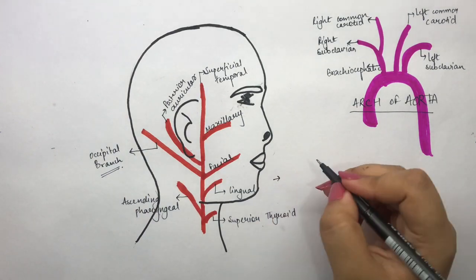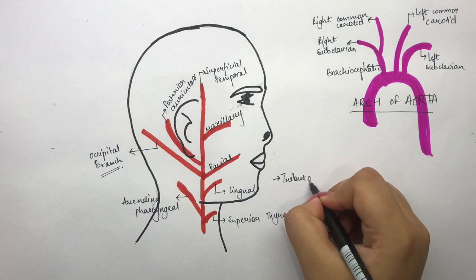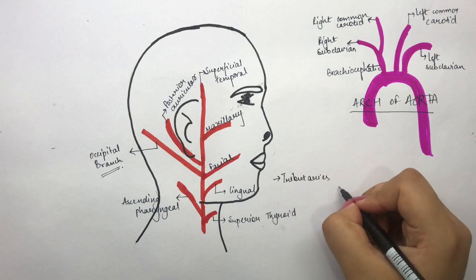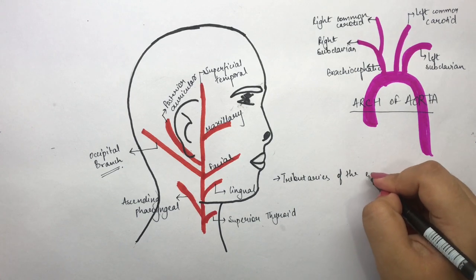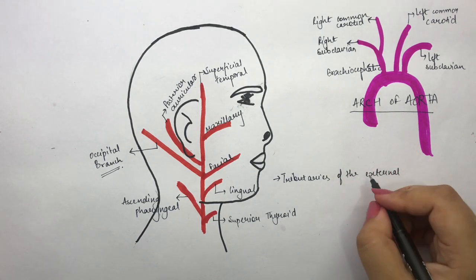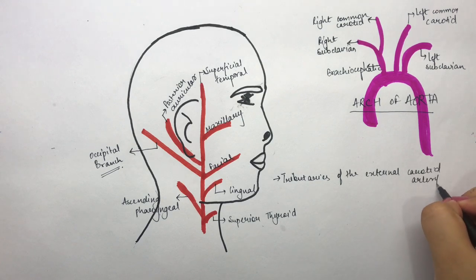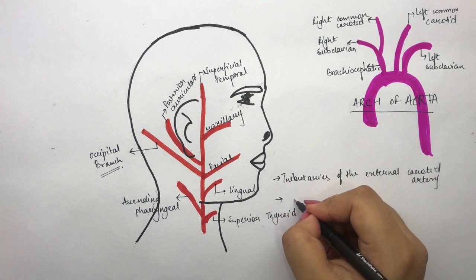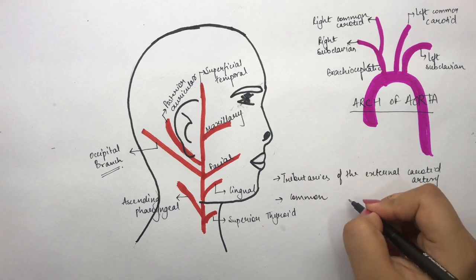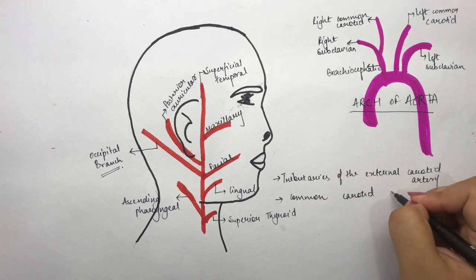The important questions asked here are about the branches of the external carotid artery — we'll see its mnemonic in a bit — and the next common question is on the common carotid artery.